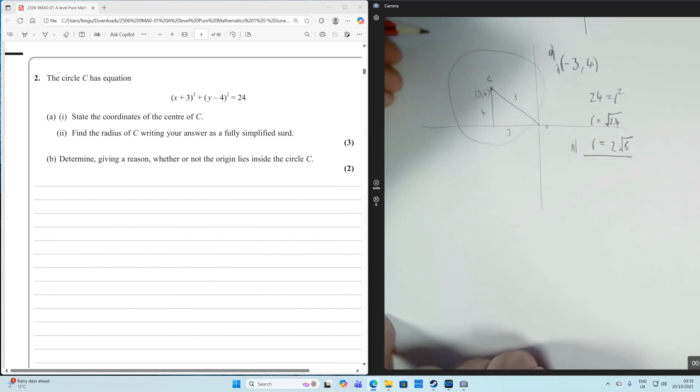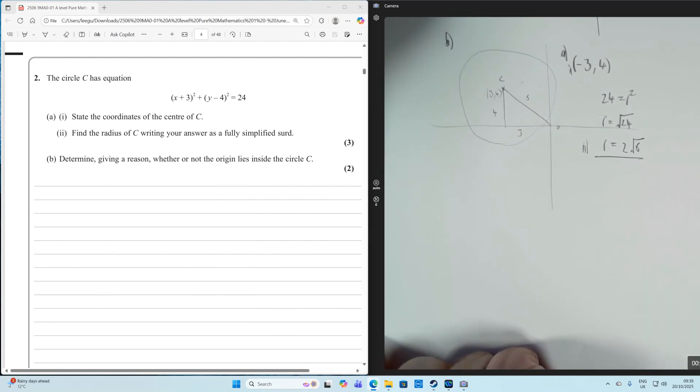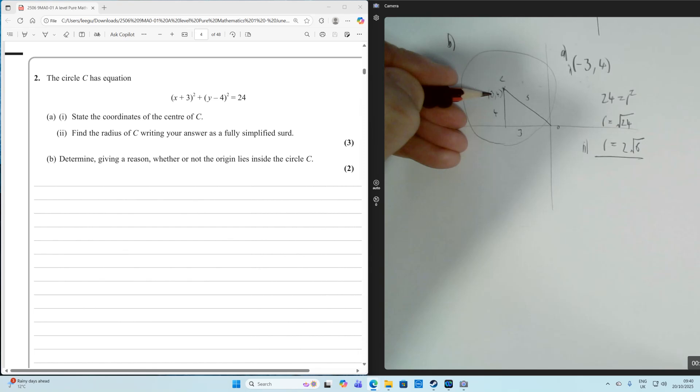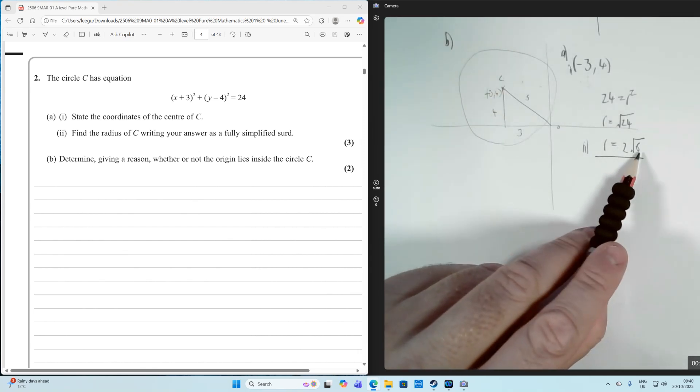Part B: determine, giving a reason, whether or not the origin lies inside the circle. I've drawn a rough sketch to illustrate what's going on. We've got our center here at (-3, 4).